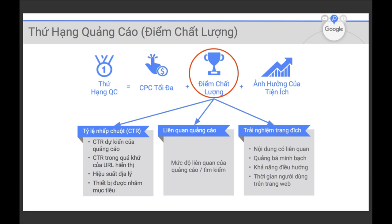Phần quan trọng hơn mình muốn nhấn mạnh trong buổi tọa đàm là phần điểm chất lượng. Điểm chất lượng được đánh giá bởi 3 yếu tố: tỷ lệ nhấp chuột, mức độ liên quan của quảng cáo, và trải nghiệm trang đích. Điểm chất lượng càng cao thì giá thầu phải trả càng thấp — ví dụ điểm chất lượng 8 so với điểm 4 thì giá thầu chỉ bằng một nửa khi cùng vị trí hiển thị.